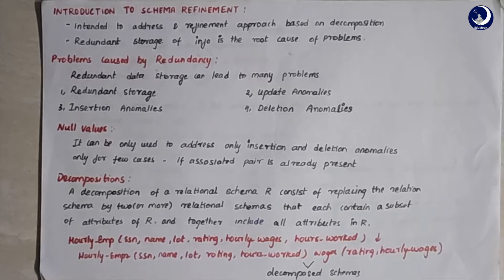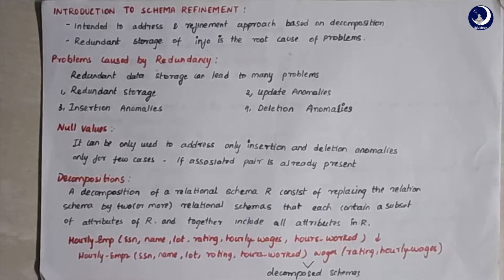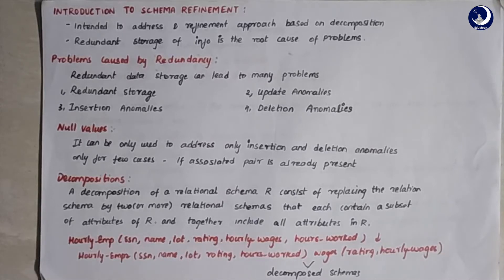Updation anomalies occur when a copy of data is stored in different places and an update is applied to only one copy without reflecting the changes to all other copies. This makes the data inconsistent, because the same data should be present uniformly across all locations. Leaving other copies untouched causes data inconsistency, which we should avoid in database design.